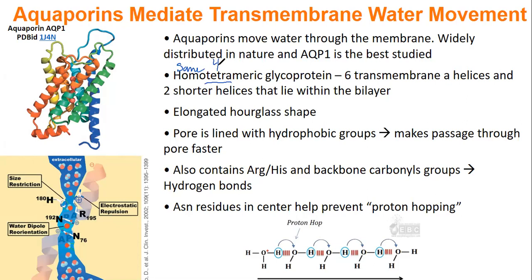It has six transmembrane alpha helixes and two shorter helixes in the bilayer. When we look at the actual shape of the protein, it has a long hourglass shape. In the pore, we have hydrophobic groups.